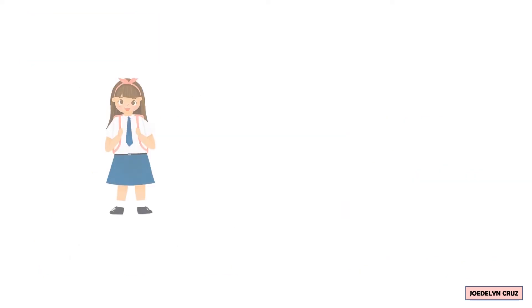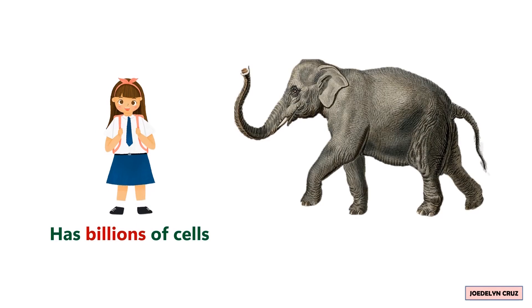Your body has billions of cells, while very large animals like elephants have trillions of cells.